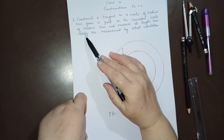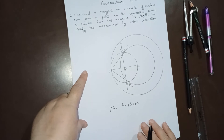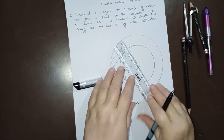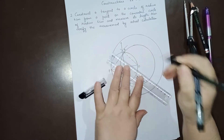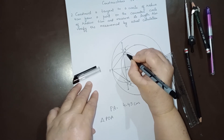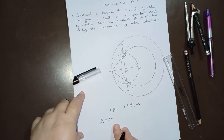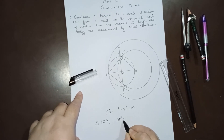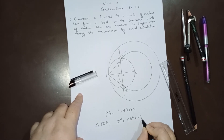They also say to verify by actual calculation. In triangle POA, the tangent is perpendicular to the radius through the point of contact, so this angle is 90 degrees. We can apply Pythagoras' theorem: OP² = OA² + PA², where OP is the hypotenuse since it is opposite the right angle.